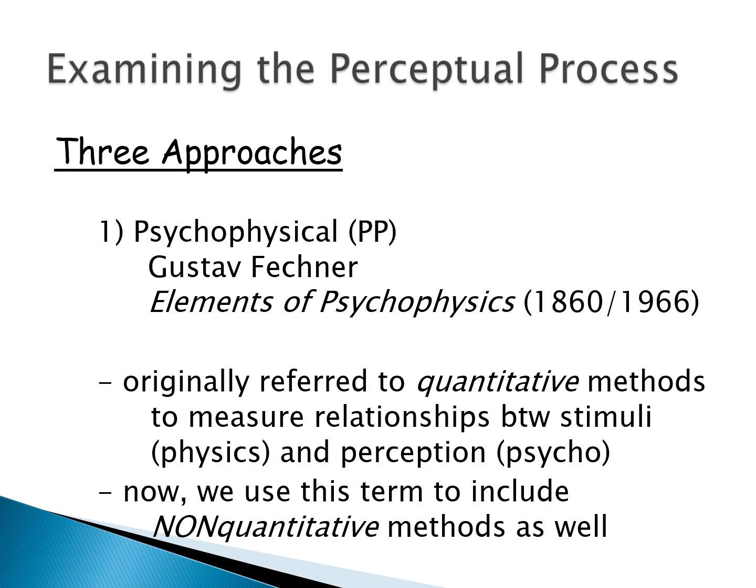Gustav Fechner originally used quantitative methods only to measure the relationships between the stimuli — the physics out in the world. He systematically manipulated those stimuli: how bright is this light? Is there twice as much light? He would systematically change the amount of light and then ask people about their perception. It was basic: Do you see it? Can you tell a difference? These kinds of really basic questions about something that can be quantitatively measured.